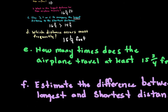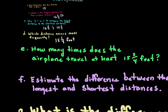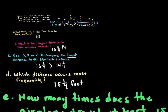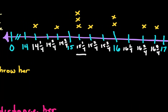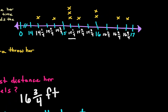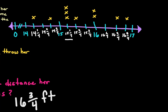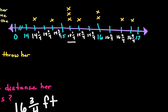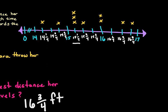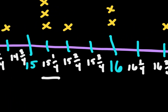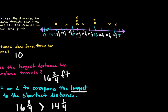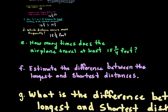How many times does the airplane travel at least 15 and two-fourths feet? Remember, two-fourths is equivalent to one-half. Looking at the line plot, 15 and two-fourths happens just once — there is only one X at that position.